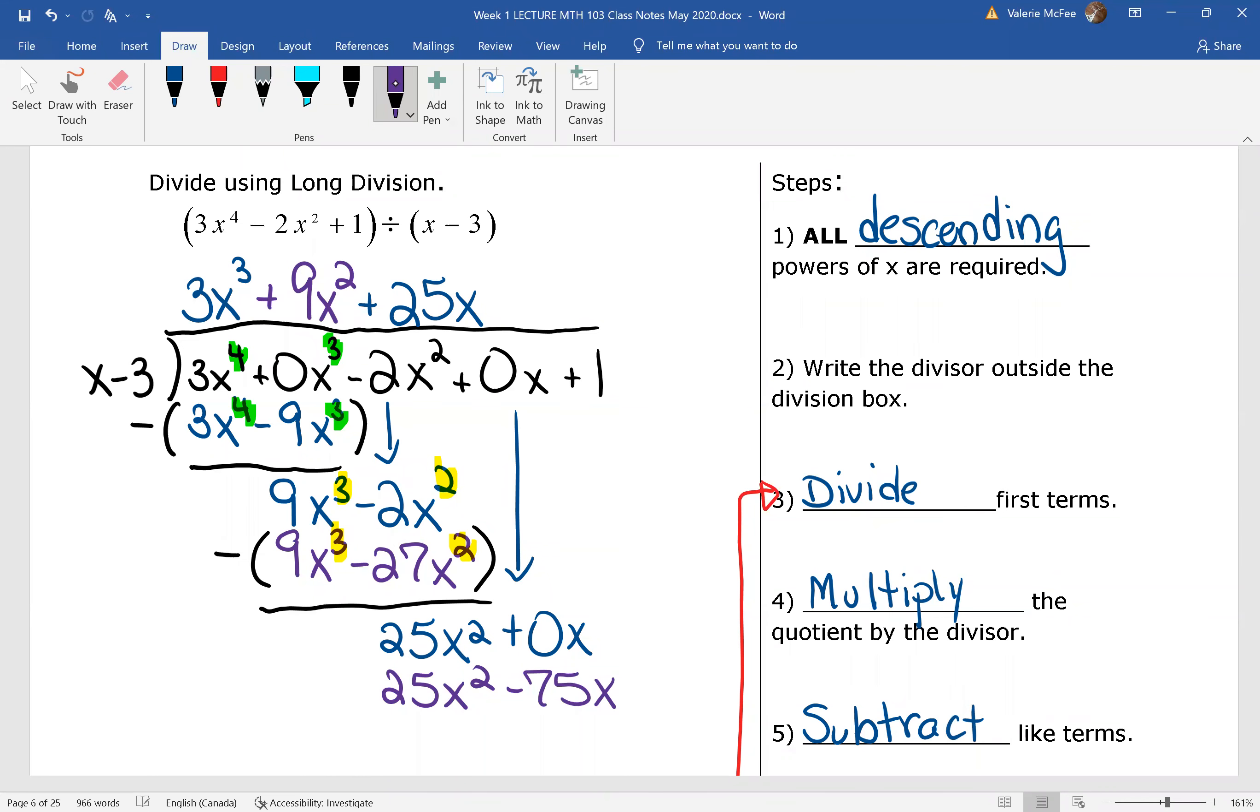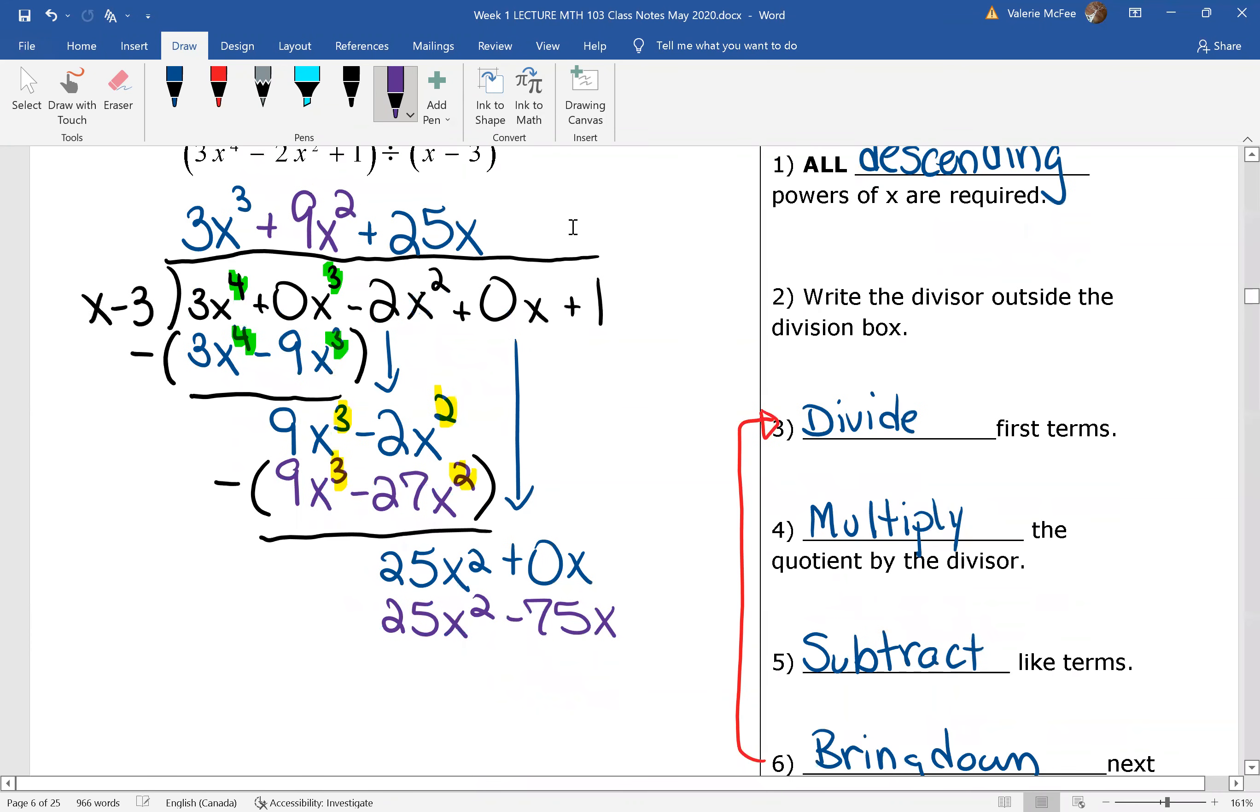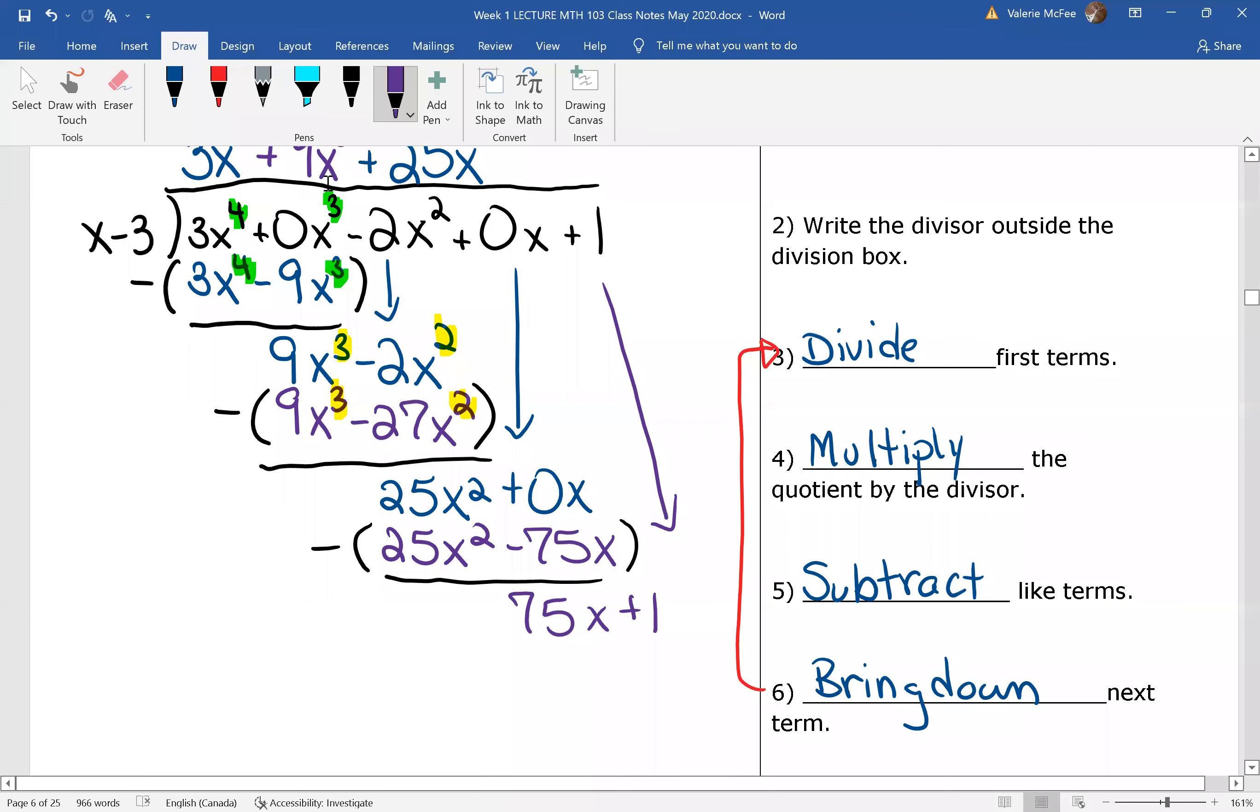After you multiply, you need to subtract and bring down the next term. Since we were able to bring down the next term, we have to go back to step 3 and divide.